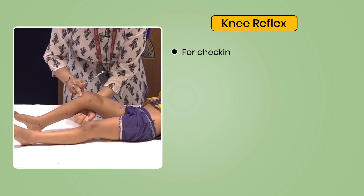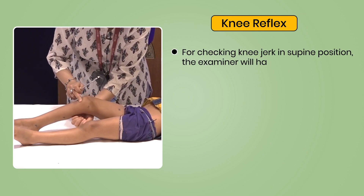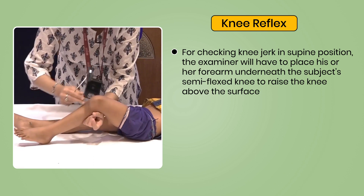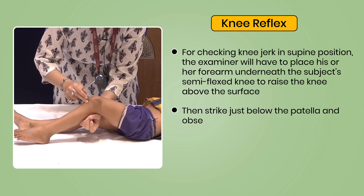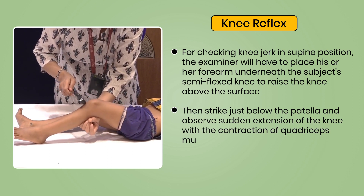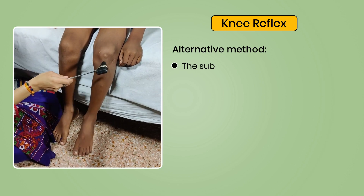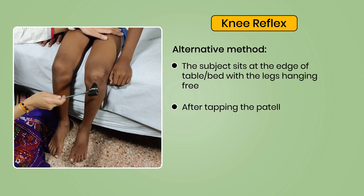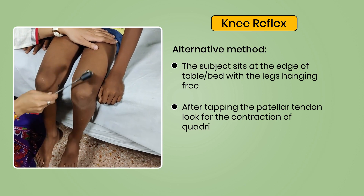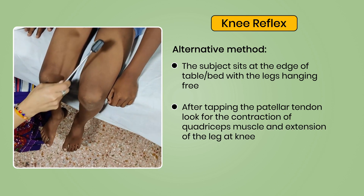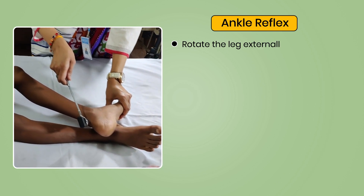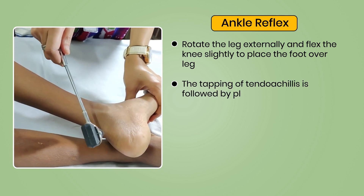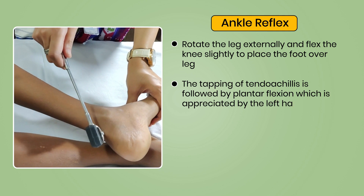Knee reflex: in supine position, place your forearm underneath the subject's semi-flexed knee to raise it, then strike just below the patella and observe sudden extension of the knee with contraction of the quadriceps. Alternative method: the subject sits at the edge of the table with legs hanging free; after tapping the patella tendon, look for contraction of quadriceps and extension of the leg. Ankle reflex: rotate the leg externally and flex the knee slightly to place the foot over the leg; tapping the Achilles tendon is followed by plantar flexion appreciated by the hand placed under the sole.